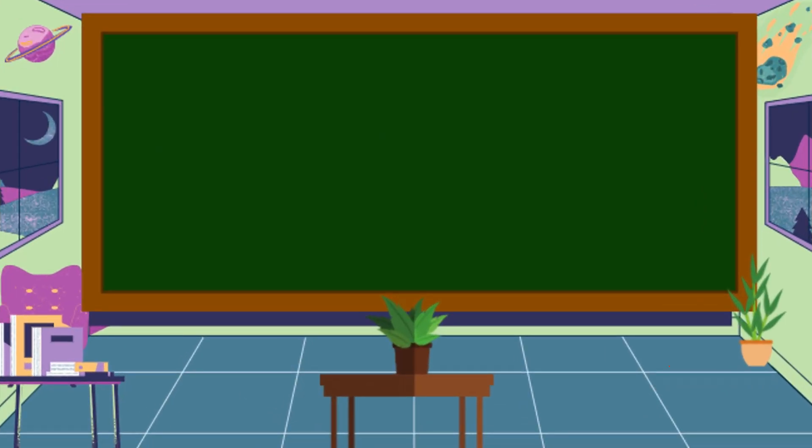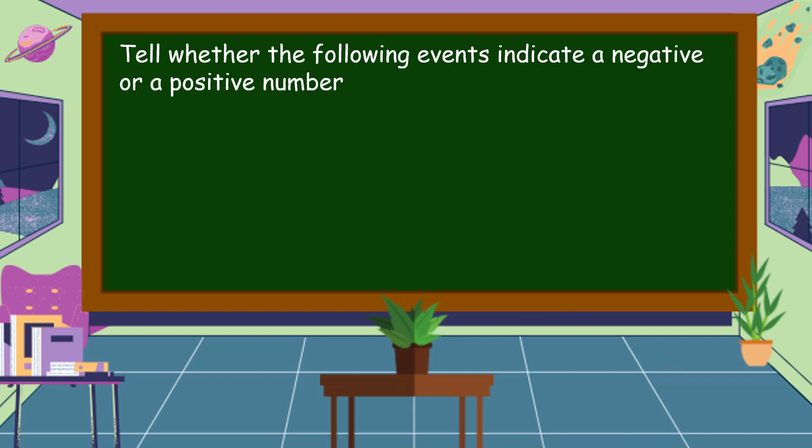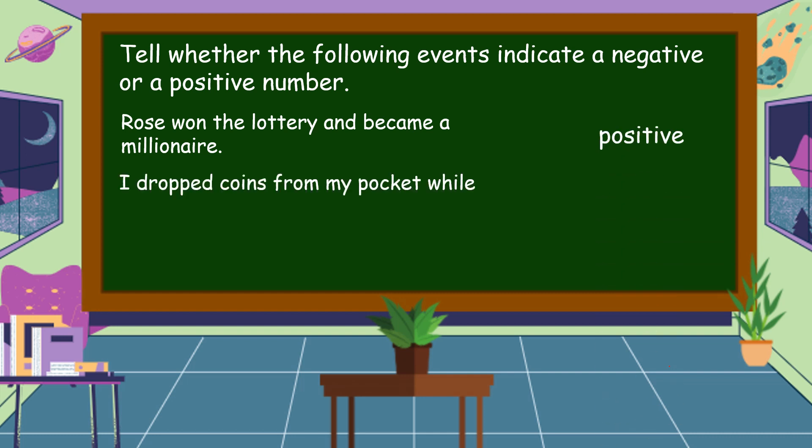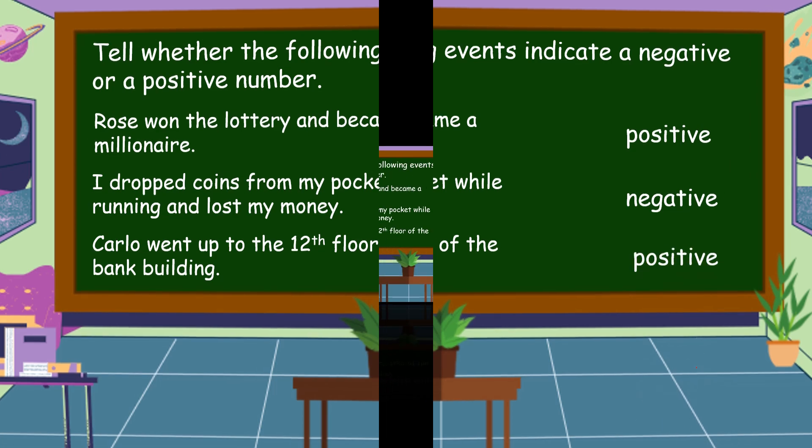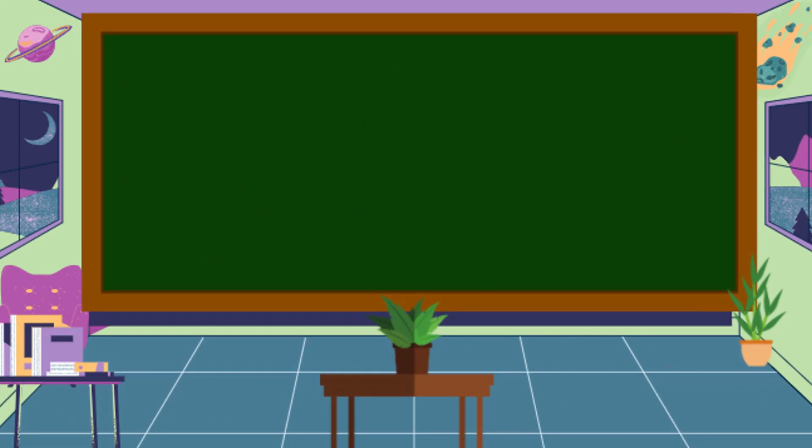To understand further about integers, let's study the following examples. Tell whether the following events indicate a negative or a positive number. Rose won the lottery and became a millionaire. This is a positive. Second, I dropped coins from my pocket while running and lost my money. This is negative. Carlos went up to the 12th floor of the bank building. This is positive.